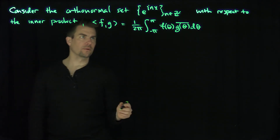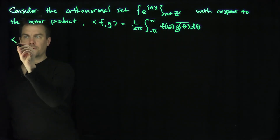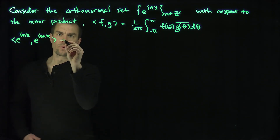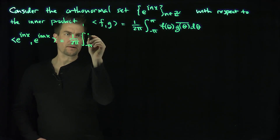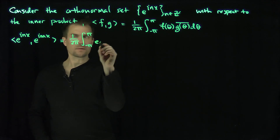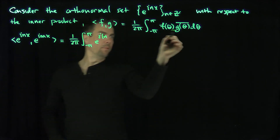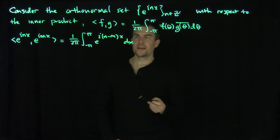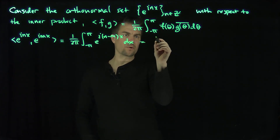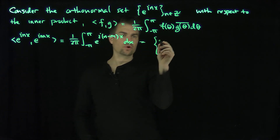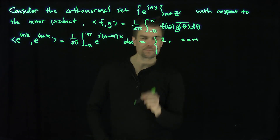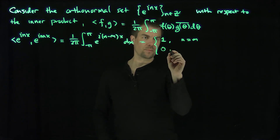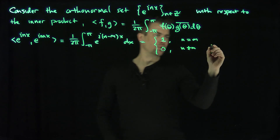It's easy to check these functions are orthogonal. If we look at the inner product of e to the i n x and e to the i m x, we get 1 over 2 pi times the integral from negative pi to pi of e to the i n x times e to the negative i m x dx. If n and m are equal, we integrate 1 from negative pi to pi, giving 2 pi, so the result is 1. If n is not equal to m, the integrand is a sine or cosine function, and by 2 pi periodicity the result is 0.